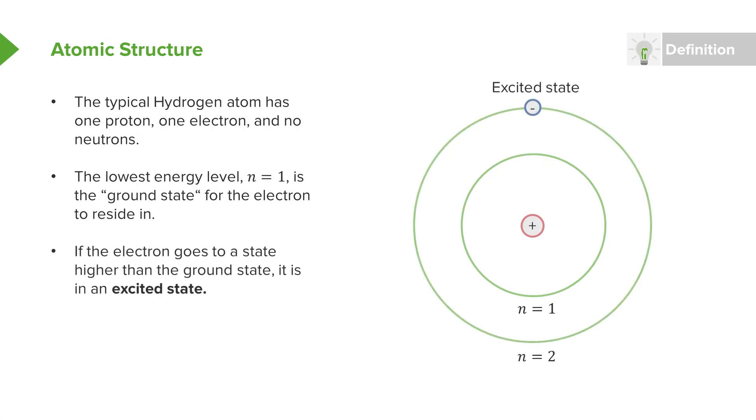If the electron goes to a higher state, like the n equals two or even the n equals three energy levels, we say that the electron, or the atom itself, is in an excited state. It has more energy because it needs to use energy to get that electron to that higher energy level, to that higher state.